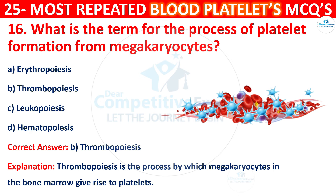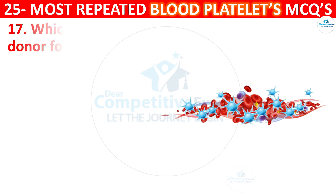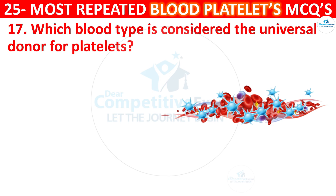Question 17. Which blood type is considered the universal donor for platelets? The options are: A, B, AB, or O.